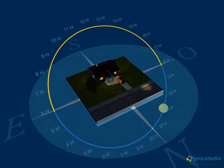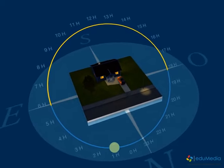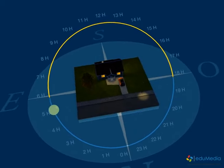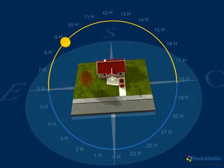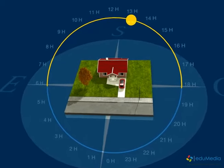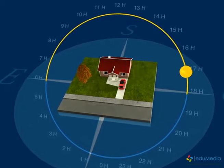The apparent path of the Sun through the sky is easily observed. Every day it rises in the east, reaches its highest point above the horizon at solar noon, and then in the evening it sets in the west.